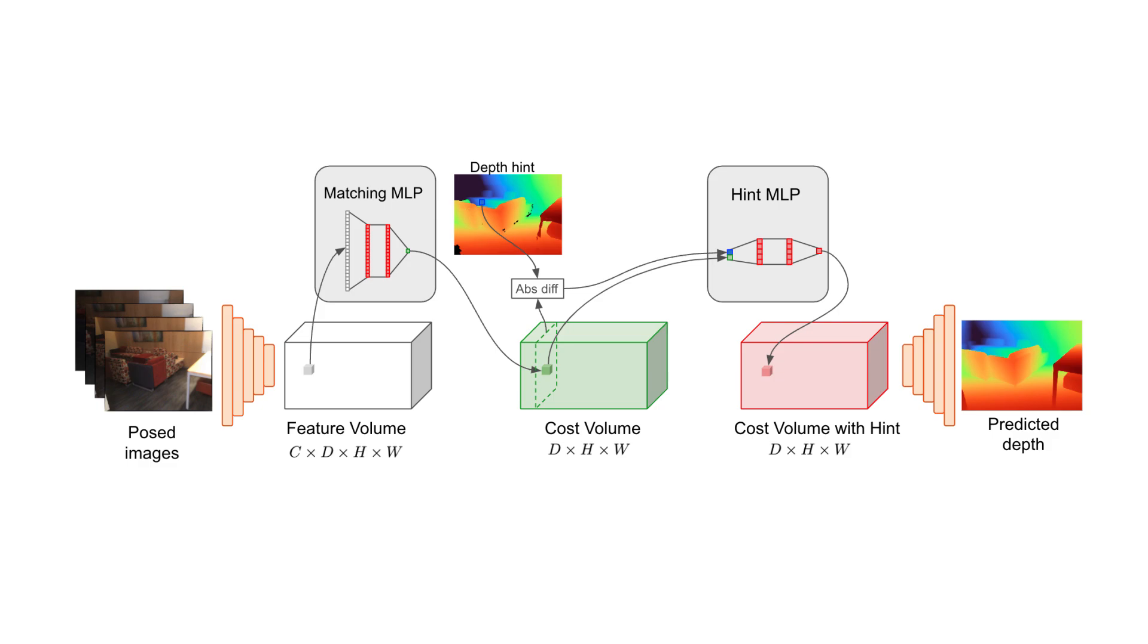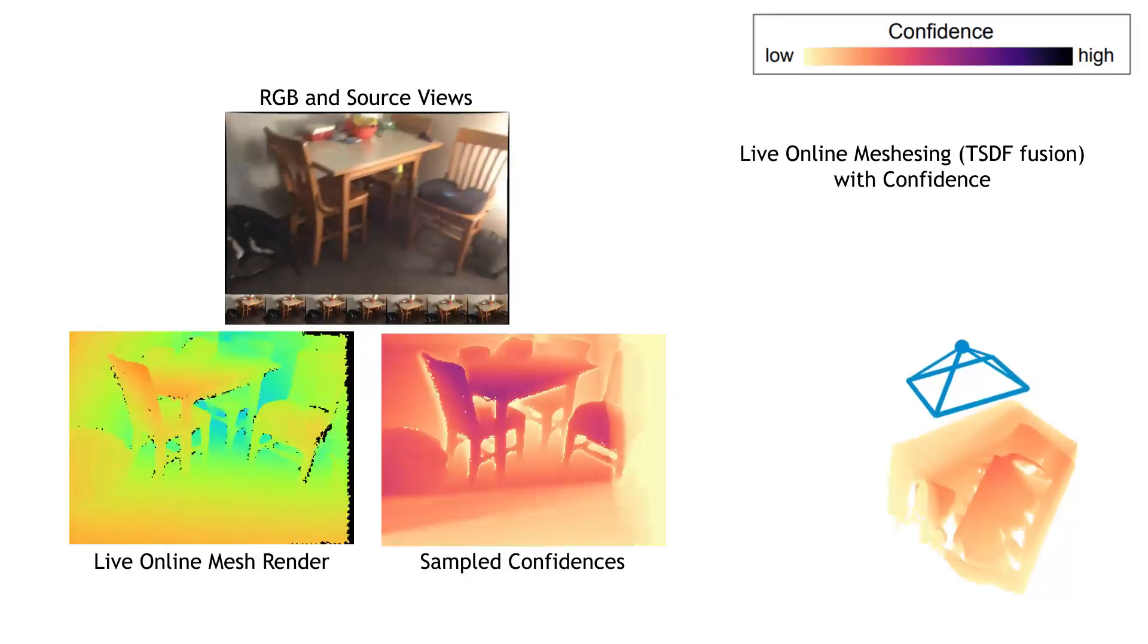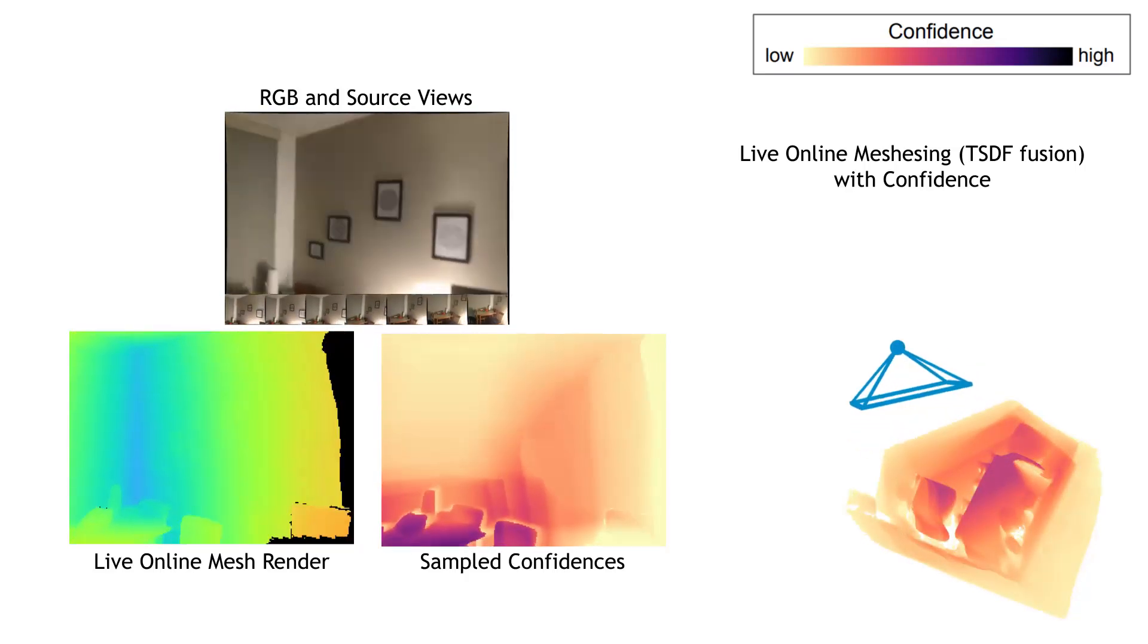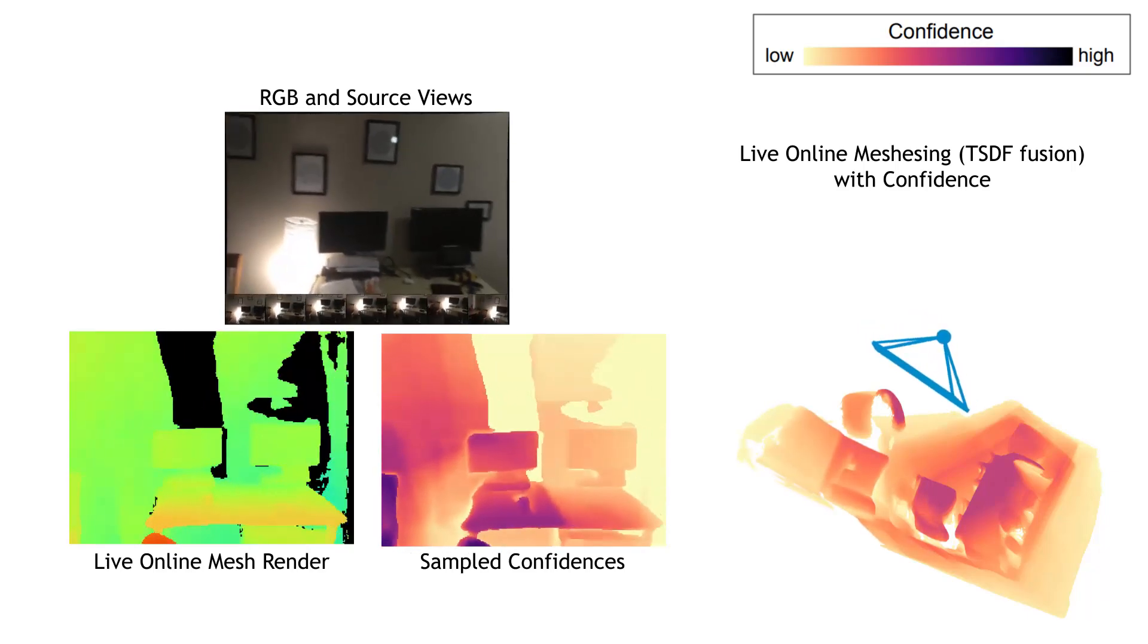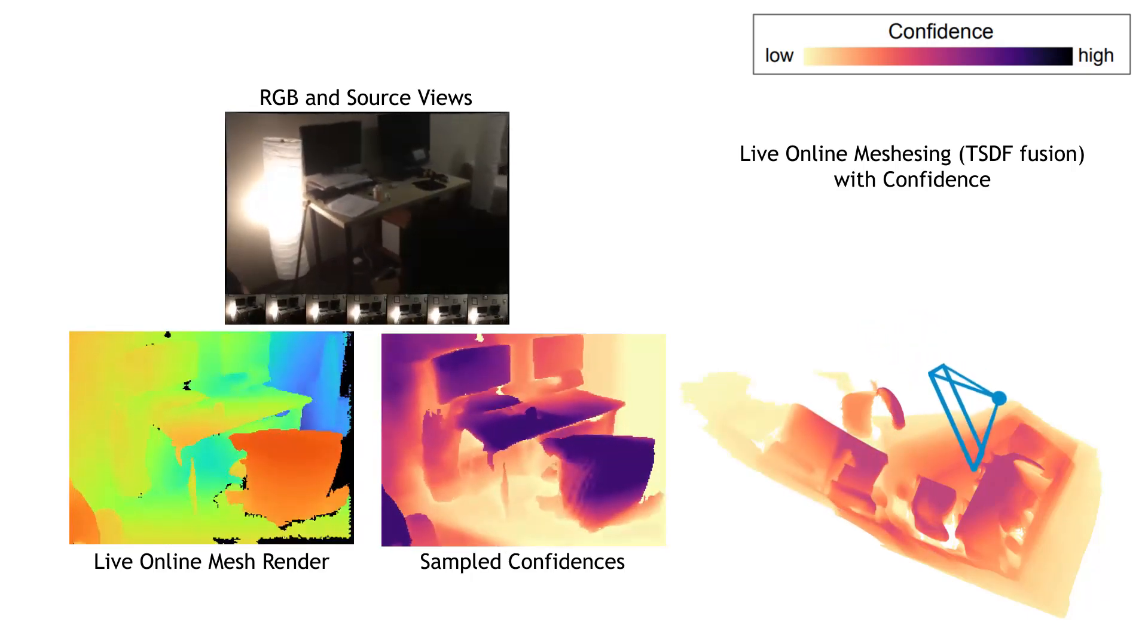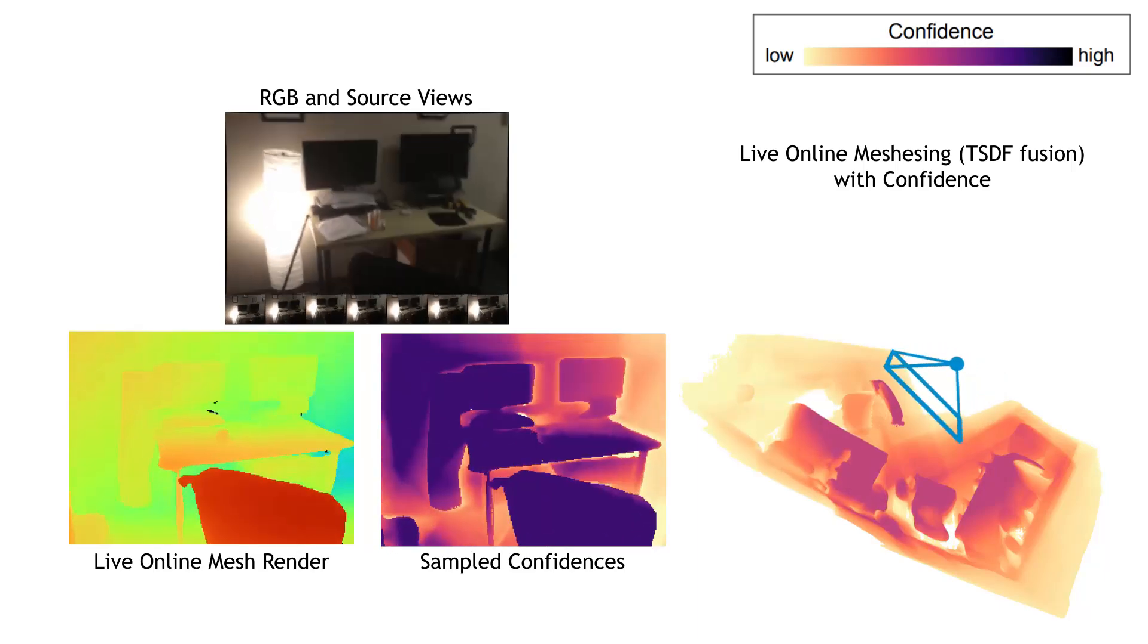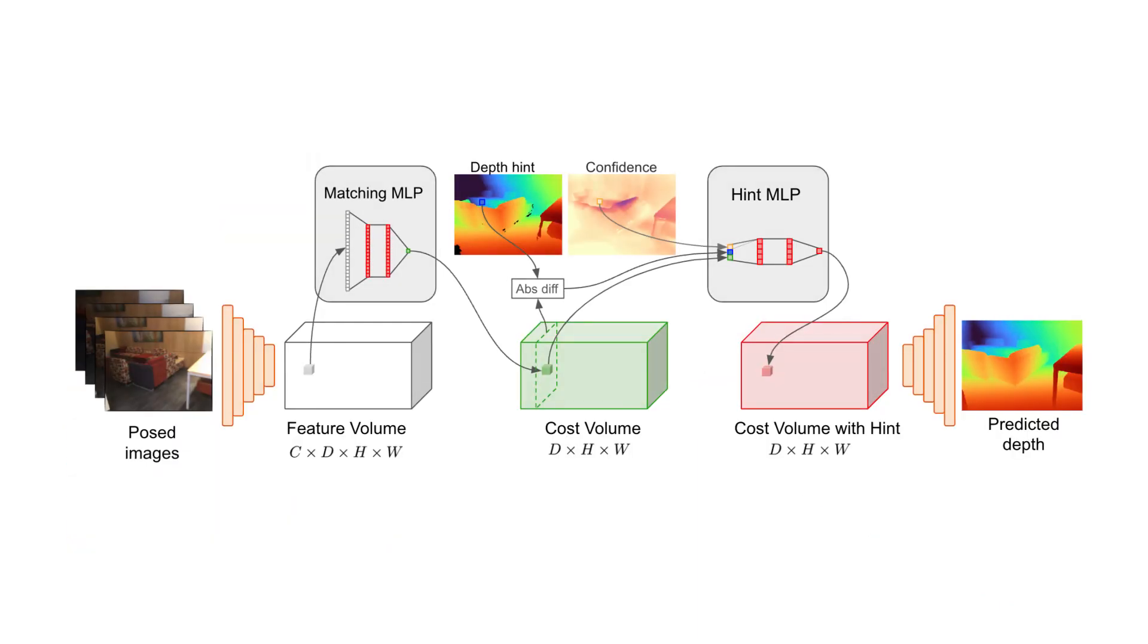However, since the mesh is still under construction, certain parts of it may not be reliable quite yet, and require more aggregation before becoming useful. To account for the reliability of still under construction live meshes, we utilize standard TSDF confidence measures to inform our network of how reliable the rendered mesh is. We visualize the confidence here as a heat map on the mesh, and as a 2D map rendered from the point of view of the camera. Our hint MLP now also takes in the sample TSDF confidence value for every pixel.